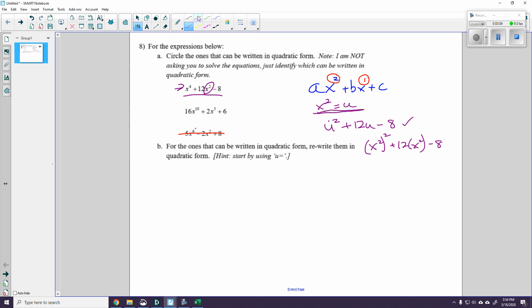Now let's look at the next one. The next one says 16x to the tenth plus 2x to the fifth plus 6. So I'm going to say x to the fifth equals u.